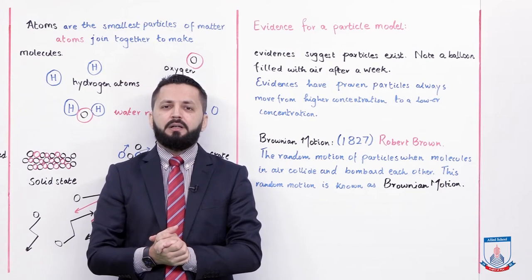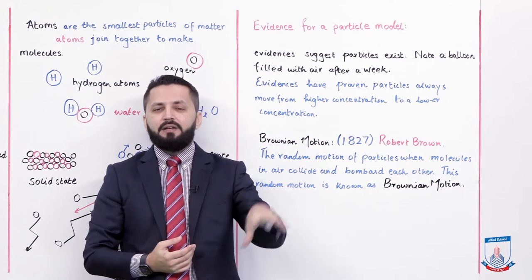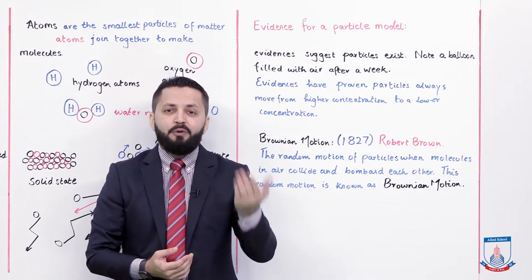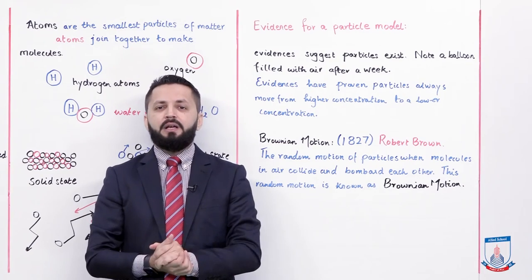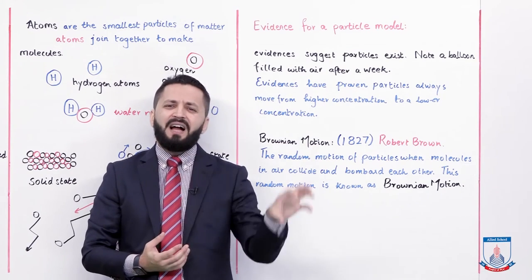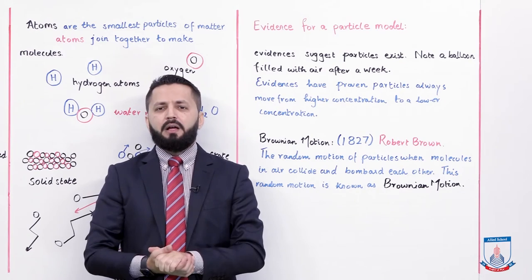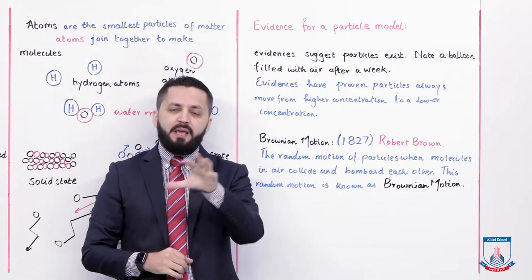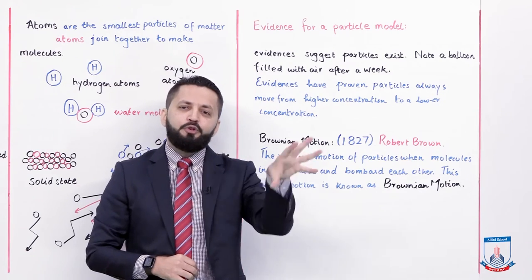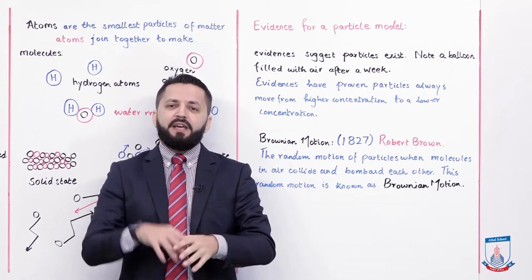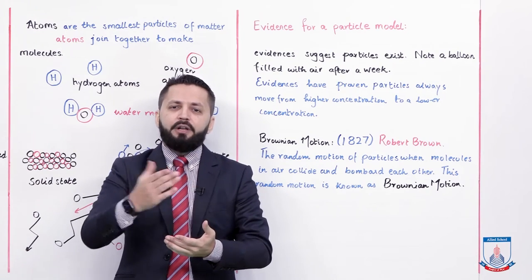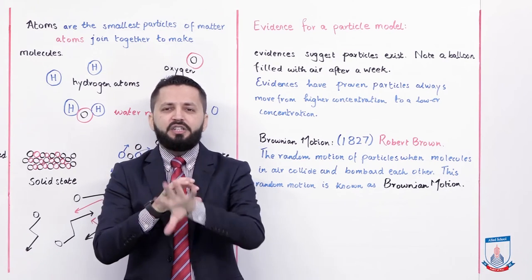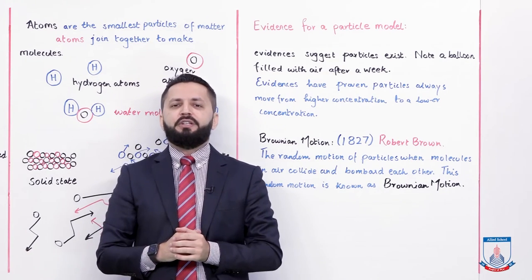The balloon example, the gas examples with the car and perfume — all of these show that particles are moving and they are moving from higher concentration to lower concentration. The perfume example can also be applied to diffusion: when you spray perfume or body spray, it travels from higher concentration to lower concentration.